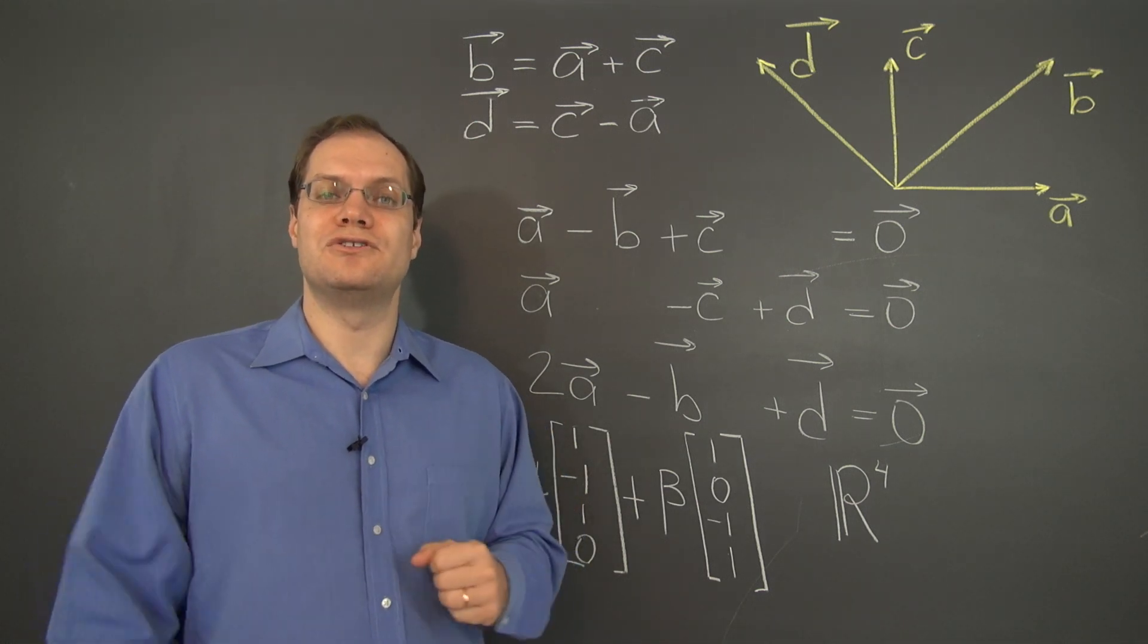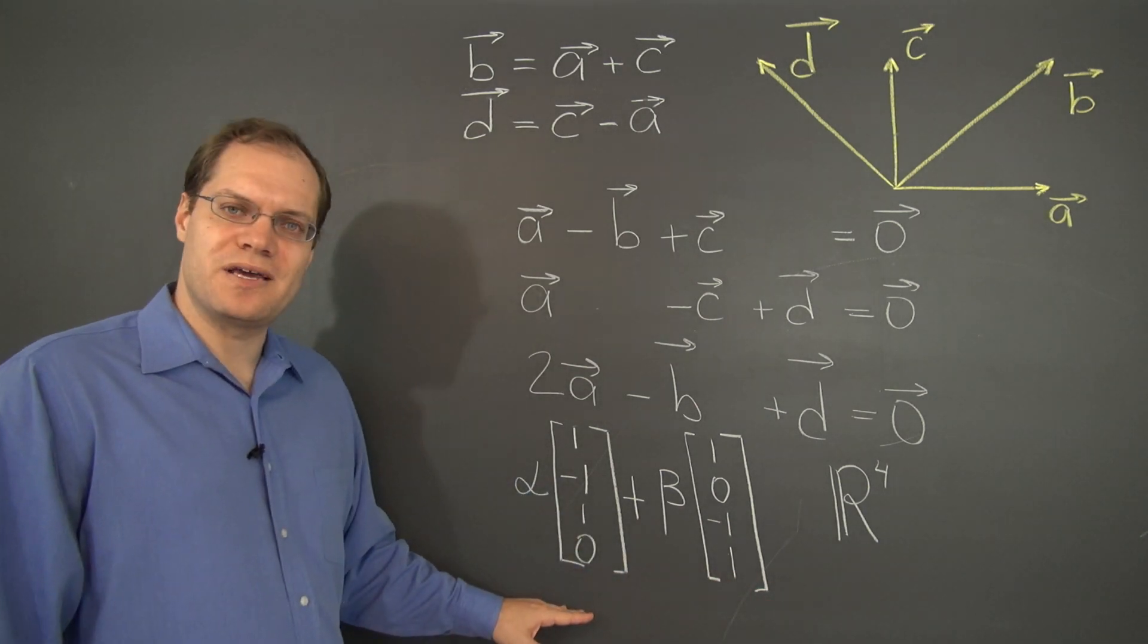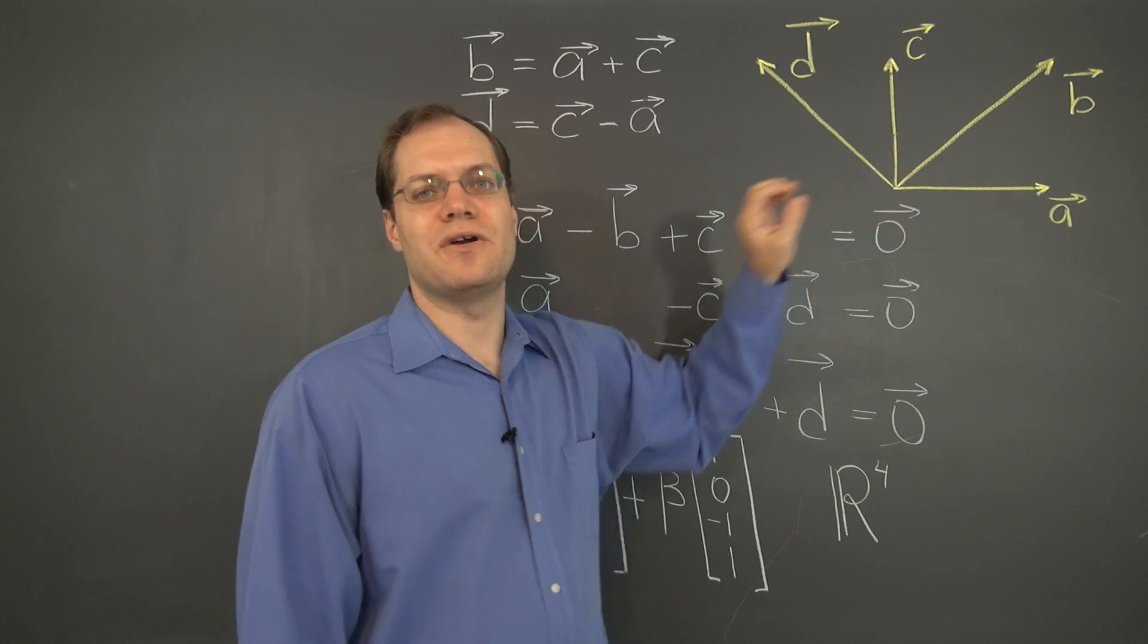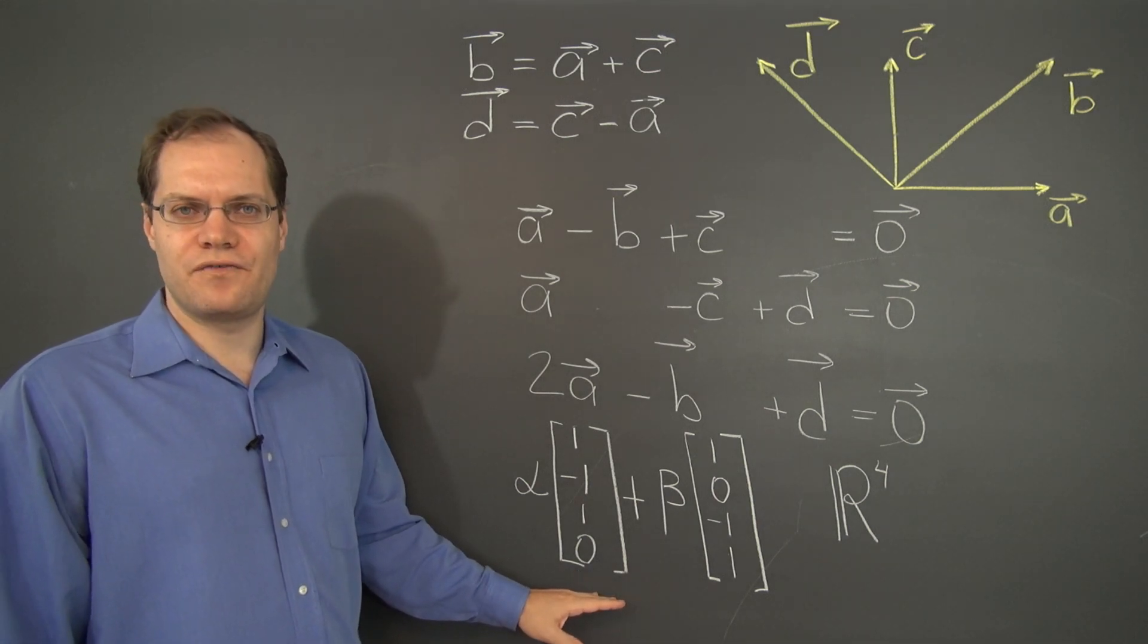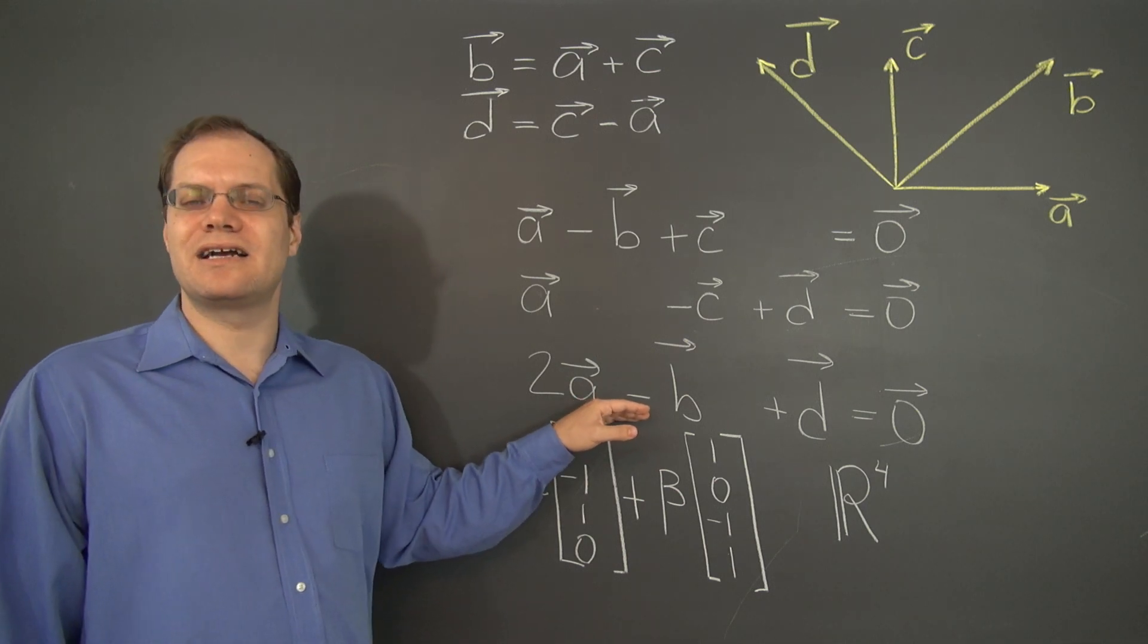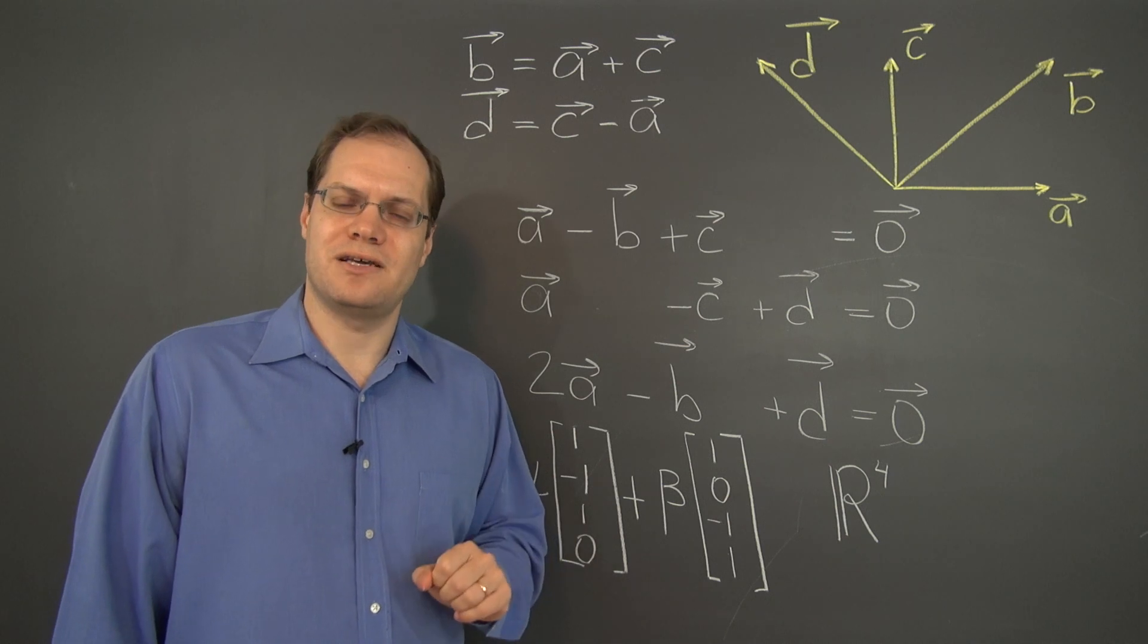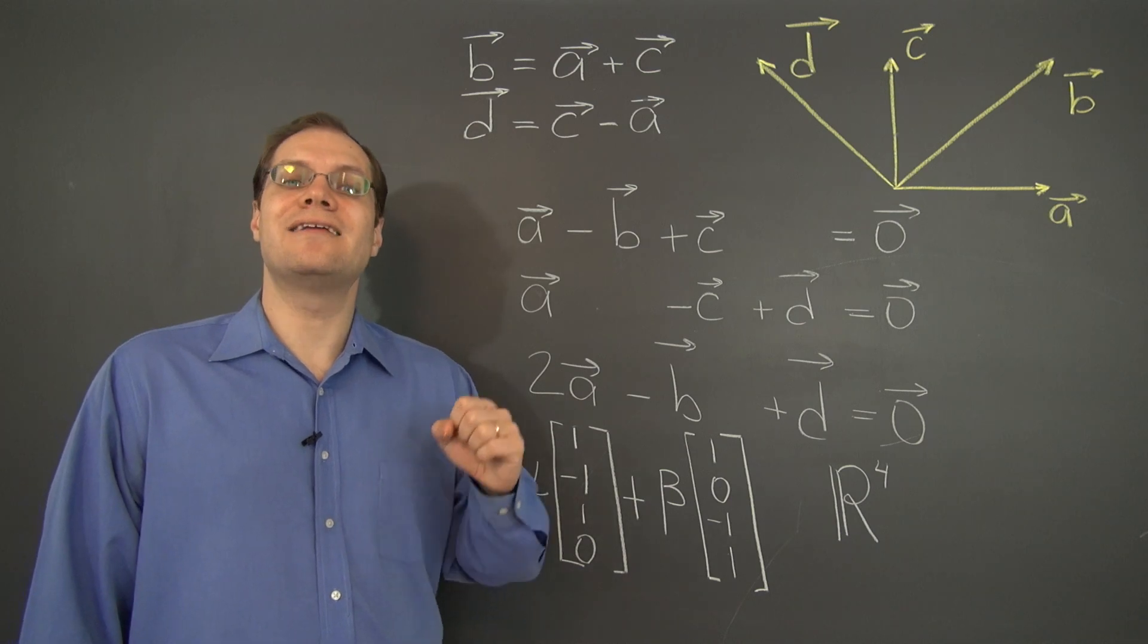But now it's time to introduce the term itself. And I think you can see what's coming. And it's that this subspace of R4 is called the null space associated with these four vectors. So, every set of vectors gives birth to a subspace of R4. And that subspace represents all possible linear combinations, the trivial one included, that yield zero. And that subspace is called the null space. This concept will prove crucial for solving linear systems or equations, analyzing linear transformations, and really for much of linear algebra.